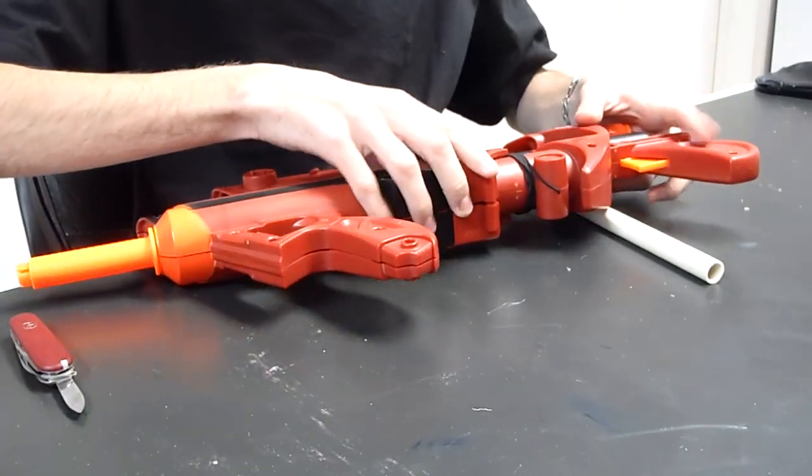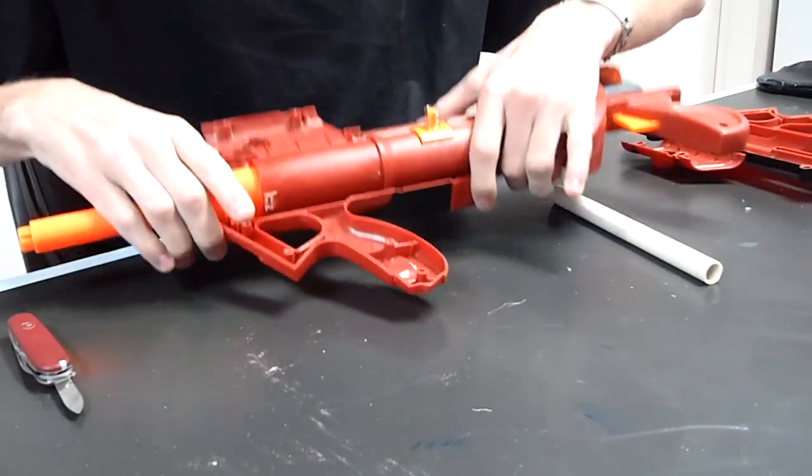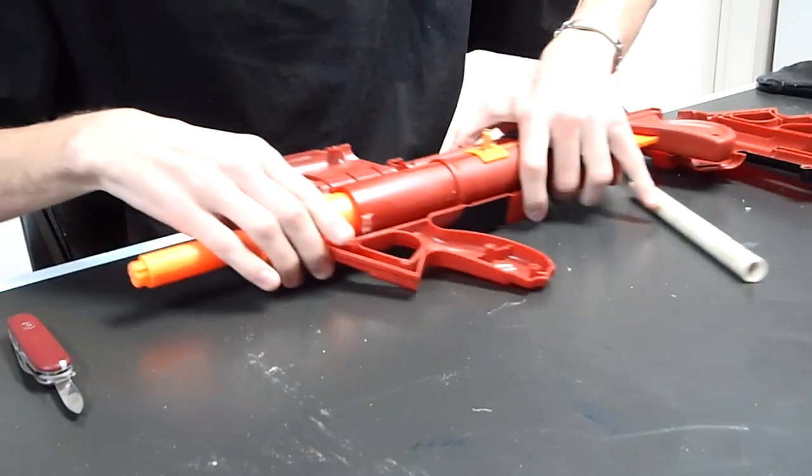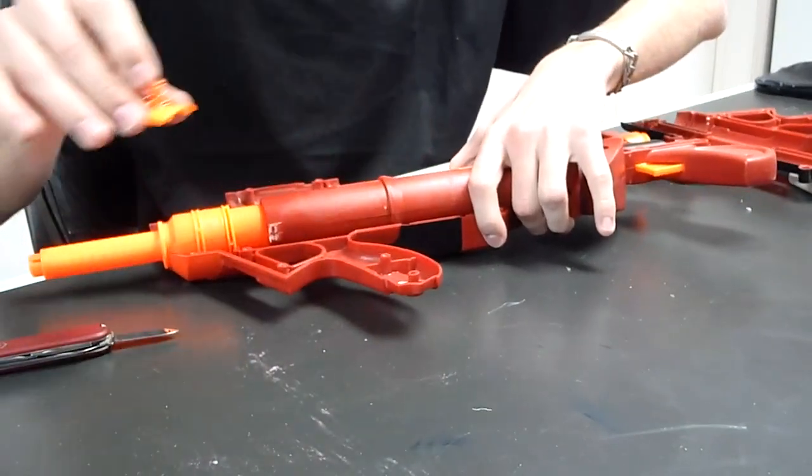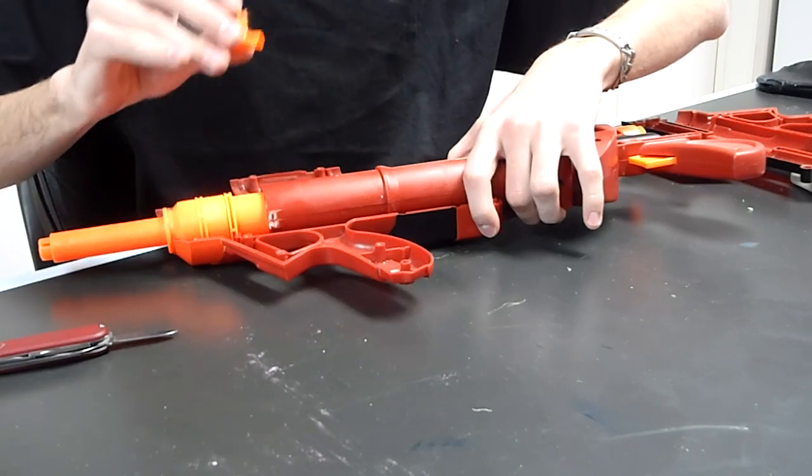After you do that, the front half is going to lift off and your internals look like this. There's this orange plastic piece that's held on by a screw. It's got a groove in the back to fit into here. These are really important.